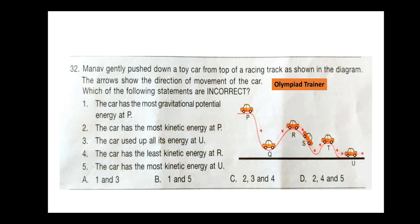Question 32. Manav gently pushed down a toy car from the top of a racing track. The arrows show the direction of movement of the car. Which of the following statements are incorrect? Statement 1: The car has the most gravitational potential energy at P. Statement 2: The car has the most kinetic energy at P. Statement 3: The car used up all its energy at U. Statement 4: The car has the least kinetic energy at R. Statement 5: The car has the most kinetic energy at U. The correct answer is option C — statements 2, 3, and 4 are incorrect.